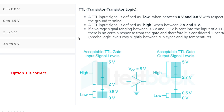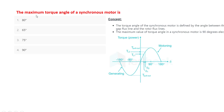The next question: the maximum torque angle of a synchronous motor is 90 degrees, so option 4 is correct. Note that pull-out torque can also be considered — the pull-out torque angle of a synchronous motor is 75 degrees. So for pull-out torque choose 75 degrees, and for maximum torque angle choose 90 degrees.